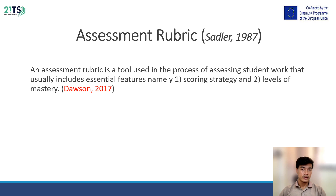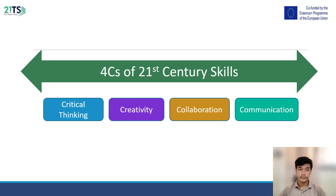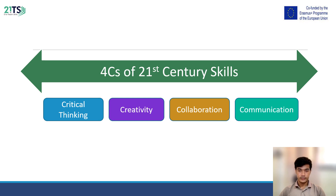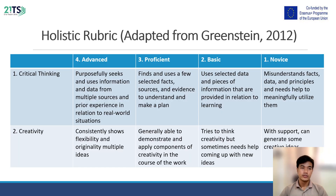Assessment rubric is a tool used in the process of assessing student work that usually includes essential features: one, scoring strategies, and two, levels of mastery. We will also go through the Four C's of 21st Century Skills: one, critical thinking; two, creativity; three, collaboration; and four, communication. We will talk about the holistic rubric adapted from Christian, 2012.